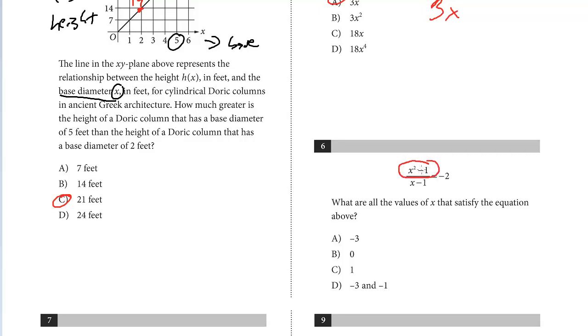This equation, this numerator, is the difference of perfect squares, x squared minus 1. Perfect square x squared, perfect square 1, and the difference between them. Whenever you see that, get in the habit of factoring. It's going to be x plus 1, x minus 1.